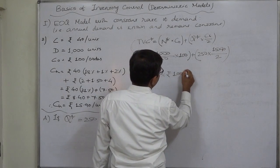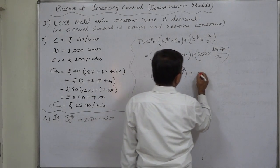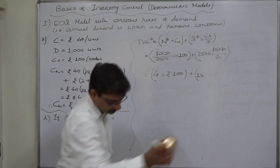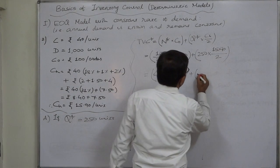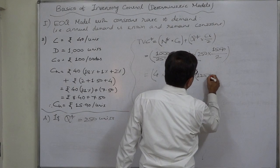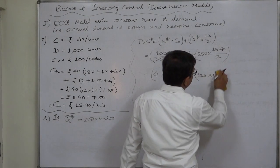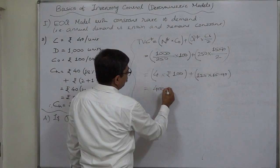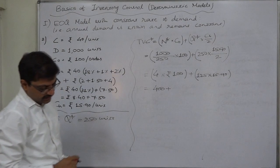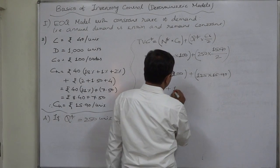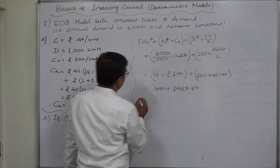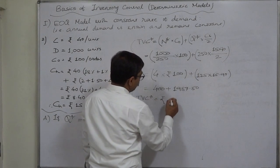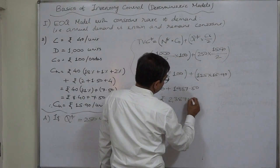So we use the formula: TVC = N* × CO + Q* × CH / 2. Here N* = D / Q* = 1000 / 250 = 4 orders. The ordering cost component = 4 × 100 = rupees 400. The holding cost component = (250 / 2) × 15.90 = 125 × 15.90 = rupees 1987.50. So ultimately the total variable cost comes to rupees 2387.50.